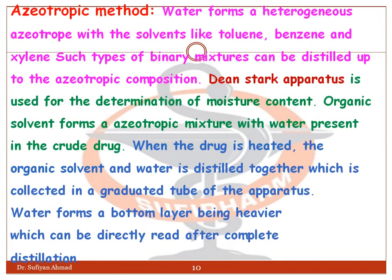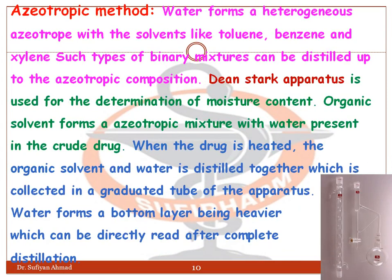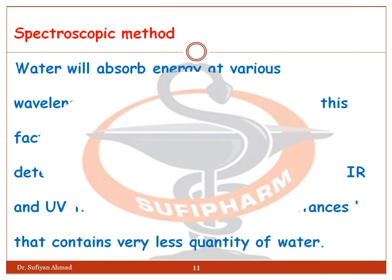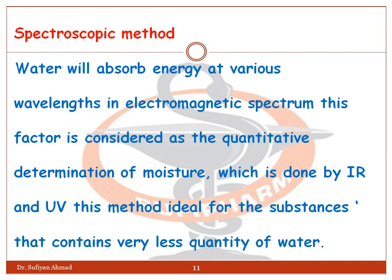The azeotropic distillation method works because water forms a heterogeneous azeotrope with solvents like toluene, benzene, or xylene; such binary mixtures can be distilled up to their azeotropic composition. A Dean Stark apparatus is used for determination of moisture content. The organic solvent forms a good azeotropic mixture with the water present in the crude drug. When the crude drug is heated, the organic solvent and water distill together, collected in the graduated tube of the apparatus. Water forms a bottom layer, being heavier, and can be directly read after complete distillation.